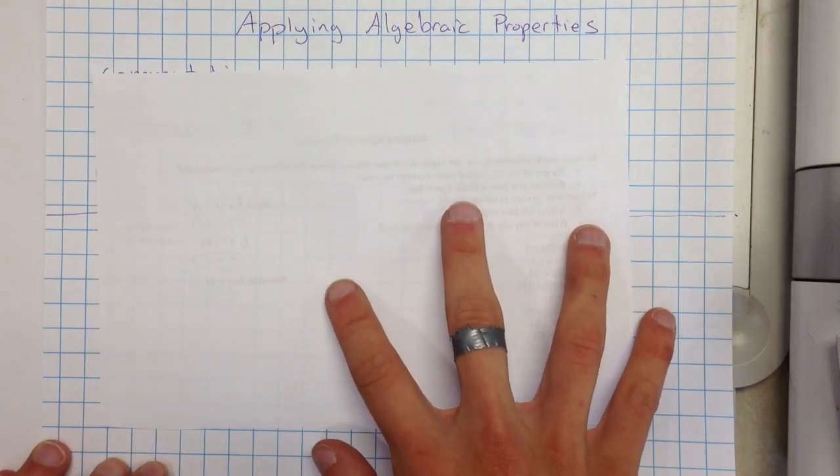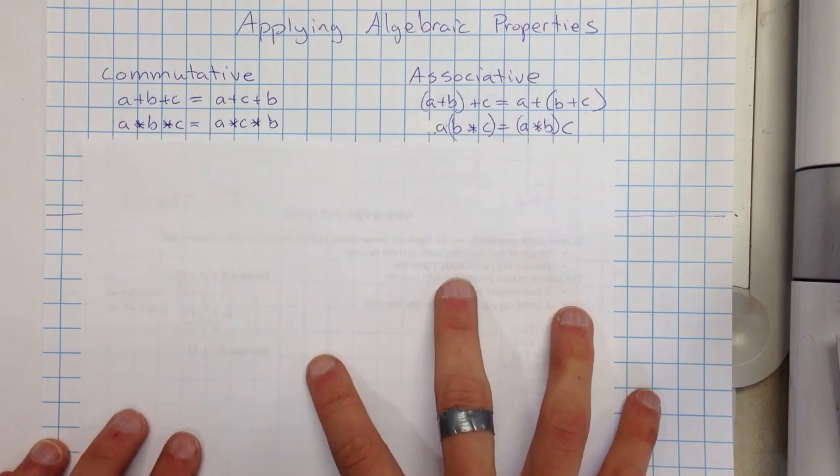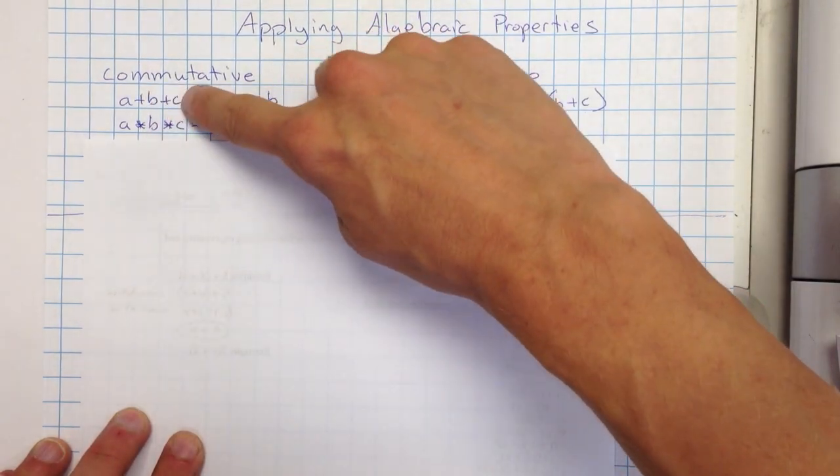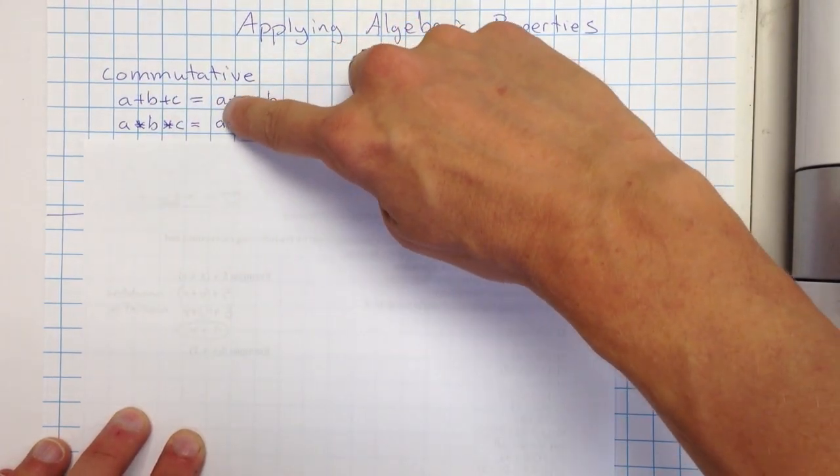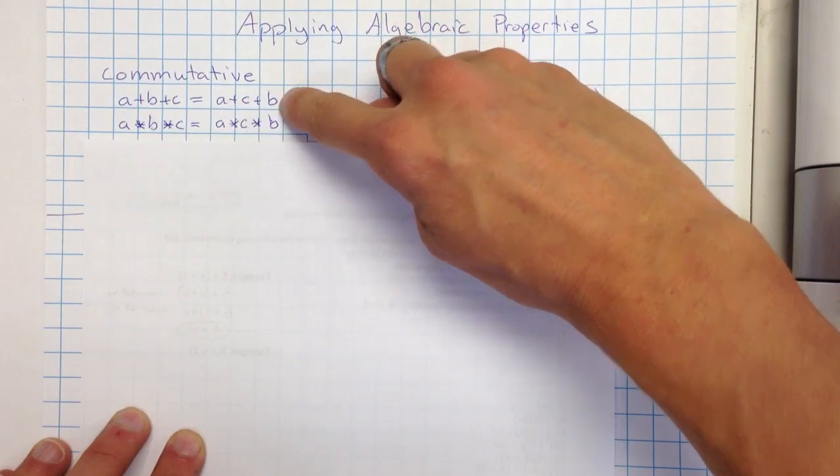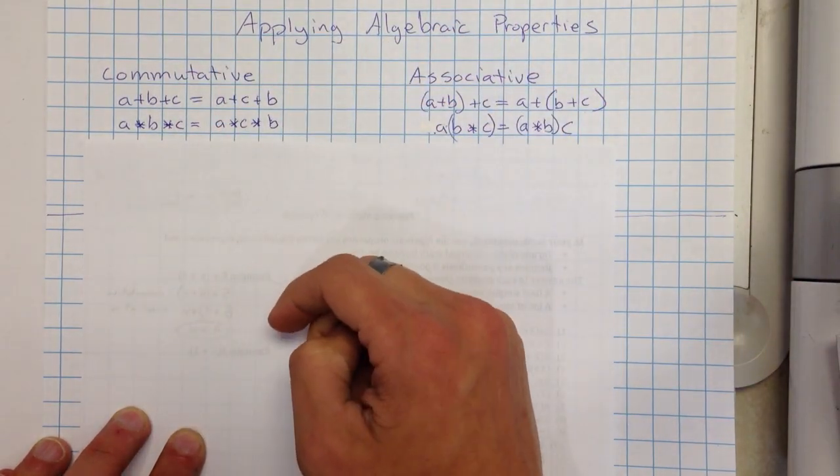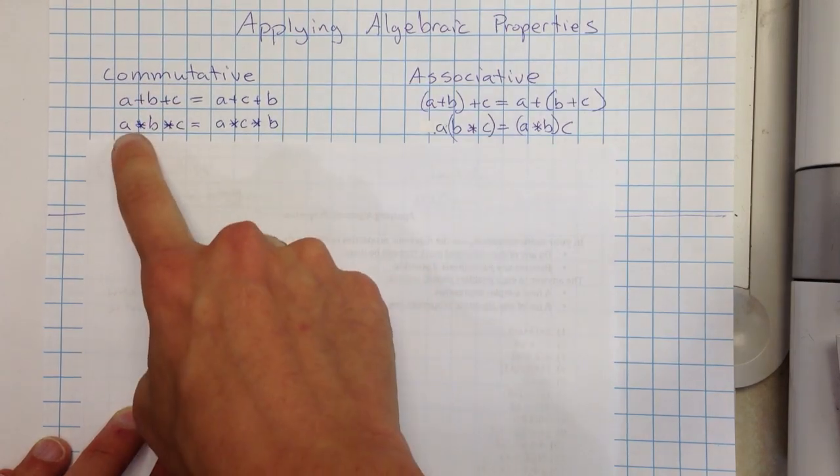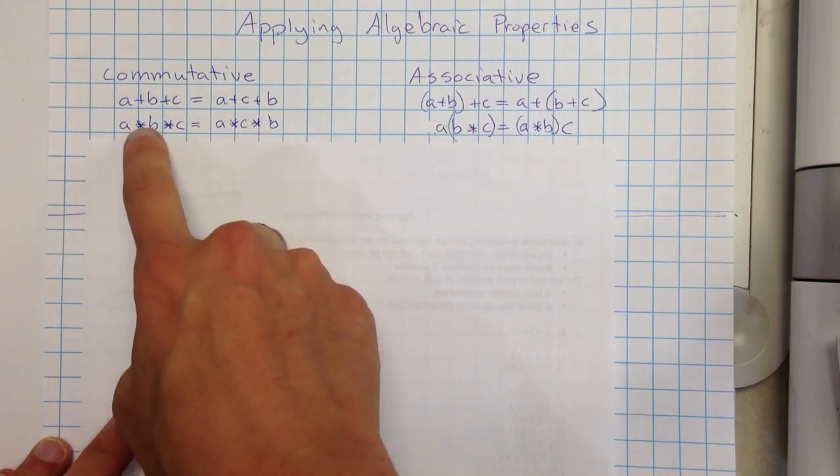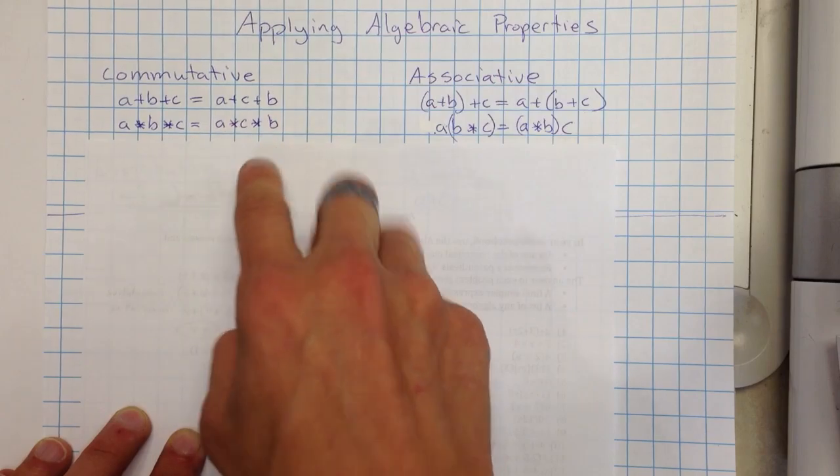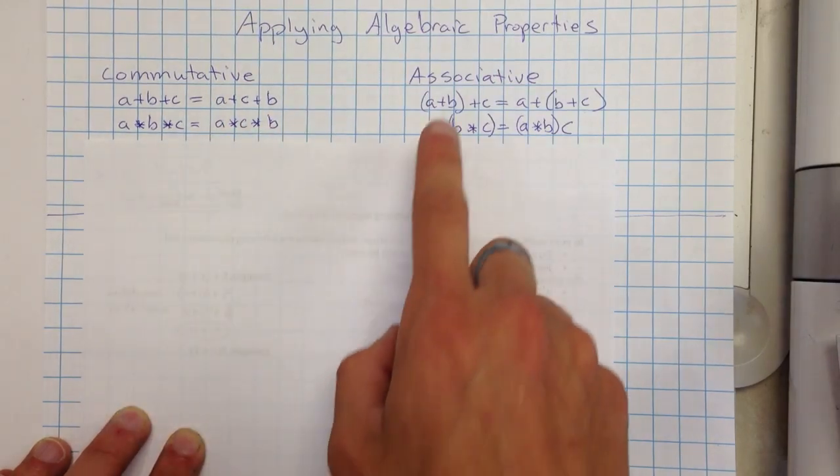Okay, so I'm going to just review the four real quick. We had commutative: A plus B plus C for any three numbers is going to be the same thing as A plus C plus B. So I can move two numbers and it's going to equal the same thing. We think commutative, moving. Also works for multiplication: A times B times C is going to give us the same answer as A times C times B. Again, I can move the numbers, get the same answer.